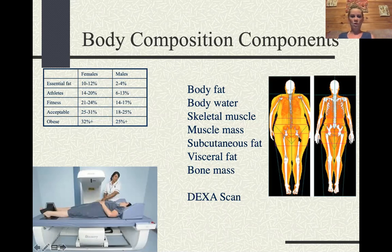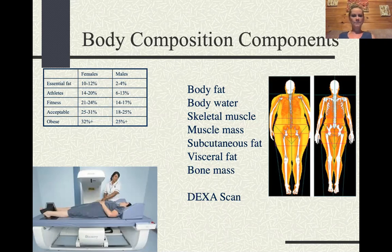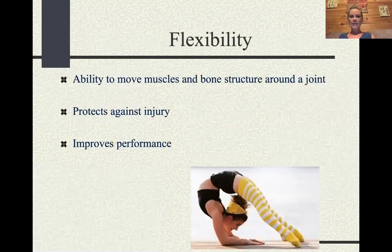Visceral fat is fat inside the abdomen — think of a beer gut. Visceral fat is the most dangerous because it presses on the organs inside the abdominal cavity and thorax, which can be very dangerous for organ functioning.